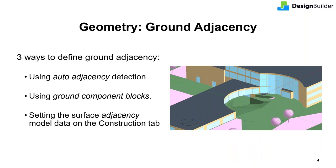Moving on, let's discuss the ways to define ground adjacency in your models. There are three ways to do that. First is by using auto adjacency detection. In Design Builder, the adjacency of a surface is determined automatically based on its position — this is switched on by default. This means that external surfaces on or below the ground plane, that is z equals zero or less, are considered to be adjacent to ground automatically. This is typically applied to surfaces such as slabs on ground or below-grade basement walls.